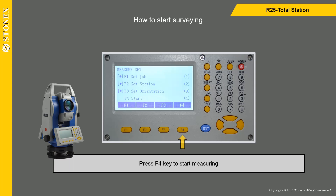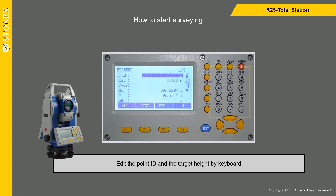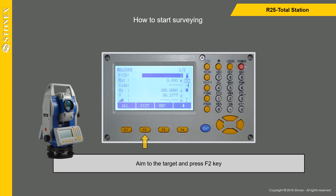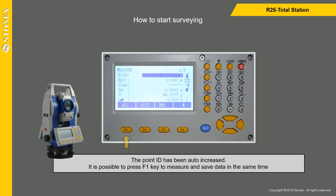Press F4 key to start measuring. Edit the point ID and the target height by keyboard. Press Shift key to change the target type. Aim to the target and press F2 key. Once the point is measured, press F3 key to store it. The point ID has been auto-increased. It is also possible to press F1 key to measure and save data at the same time.